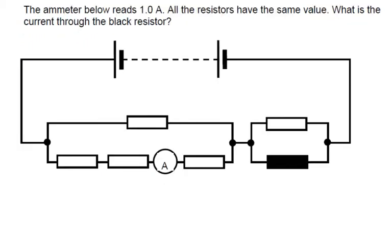The ammeter below reads 1 amp. All the resistors have the same value. What's the current through the black resistor? Something I would do with this is, if they're all the same value, why not just make something up — like maybe they'll each be 10 ohms.